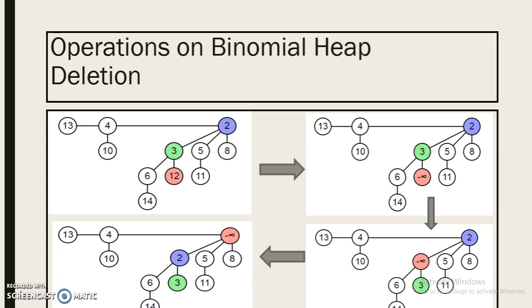The tree is then detached from the rest of the heap and the node is removed. The fragments of the old tree are reversed and linked together to form a new heap.